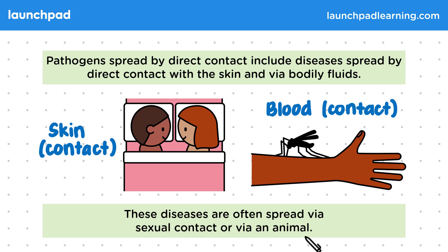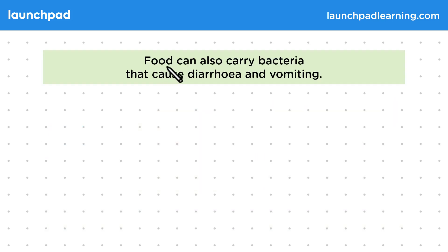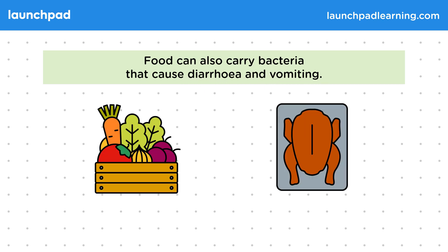For the exam you need to know these ways in which pathogens can spread, and specific examples will be discussed in more detail elsewhere in the course. Food can also carry bacteria that cause diarrhoea and vomiting. Food can be contaminated by many things, including bacteria on fruit and vegetables and in meat.